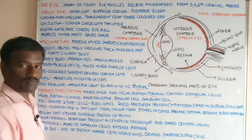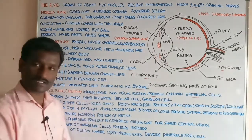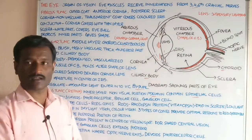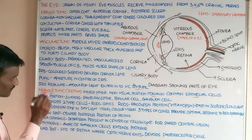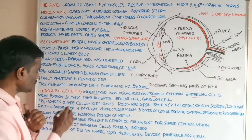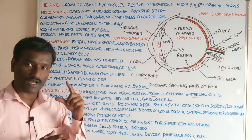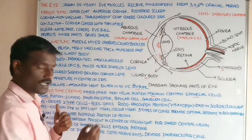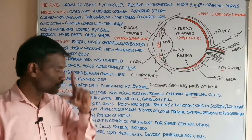The visual portion of the retina consists of three layers: the photoreceptor cell layer, the bipolar cell layer, and the ganglionic cell layer. The photoreceptor layer consists of two types of cells: rods and cones.